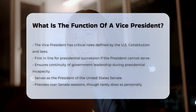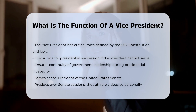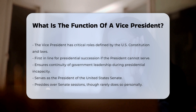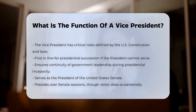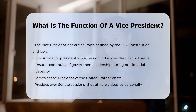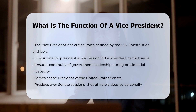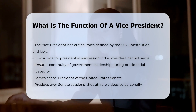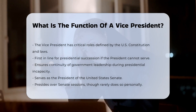Presidential succession. The vice president is first in the line of presidential succession. This means if the president is unable to serve due to death, resignation, or temporary incapacitation, the vice president assumes the presidency. This ensures continuity of government leadership.